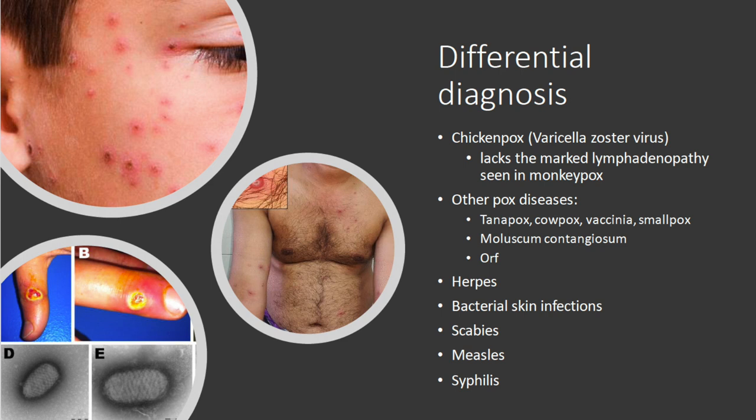In terms of differential diagnosis, there are lots of rash illnesses. Chickenpox is probably the one most frequently confused, particularly in West Africa, and indeed you can get both chickenpox and monkeypox at the same time. It's important to note that chickenpox isn't a pox virus infection — it's caused by varicella zoster virus. It does look quite different in terms of lesion appearance, but sometimes the early vesicles, which are quite transient in chickenpox, can be mistaken.